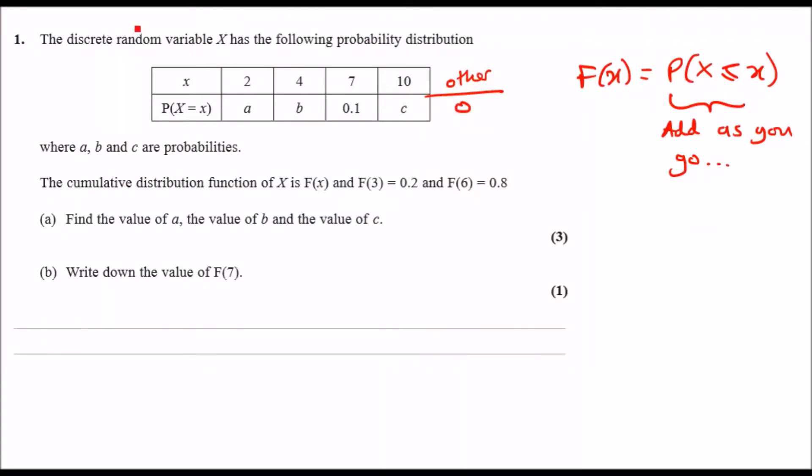Number one: the discrete random variable X has the following probability distribution function. So you've got four points: 2, 4, 7, 10, with respective probabilities. Quick note: all probabilities here must always add up to one. And for any other X value, for example 3 or 5, the probability value is zero because they've all been defined. That's an important rule to take in.